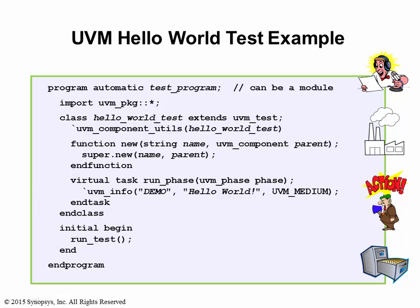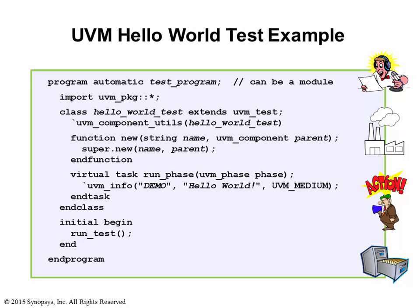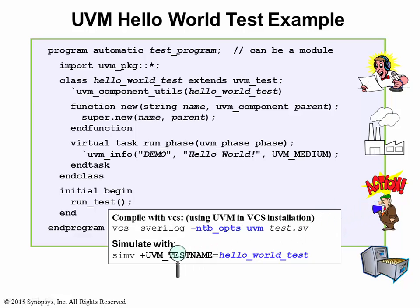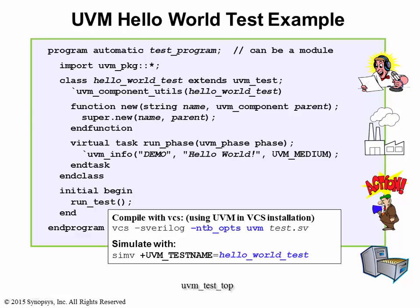In this example, I'm going to compile this code with VCS. When running a UVM simulation, you will need to tell UVMroot what test to run with a +UVM_TESTNAME switch. UVMroot extracts the test class name from this runtime switch, uses the factory to construct the test object, and calls it UVM_TestTop.